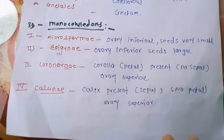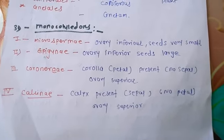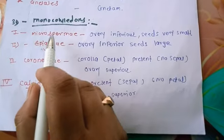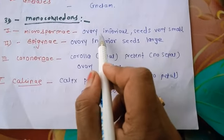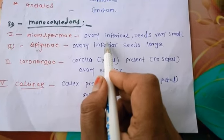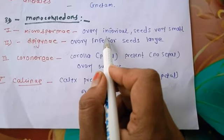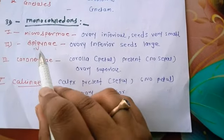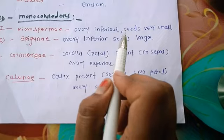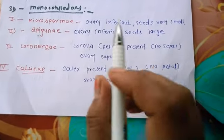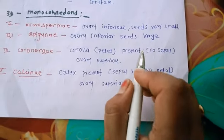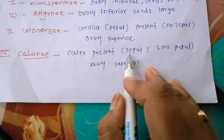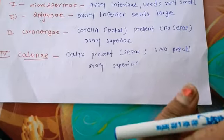The third type of Phanerogams is monocotyledon — mono means single and cotyledon means seed, so only one seed is present. The series in monocotyledon include: microspermi, where the ovary is inferior and seeds are very small; and a series where the ovary is inferior with large seeds and corolla (petals) present, while calyx (sepals) is absent.